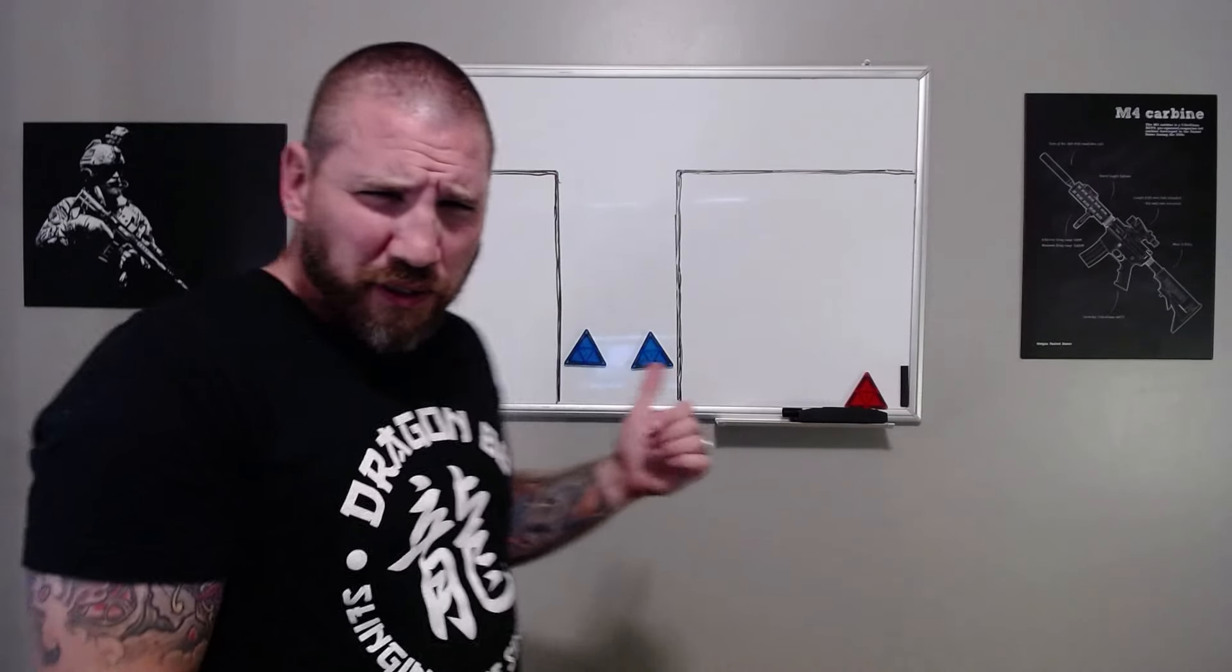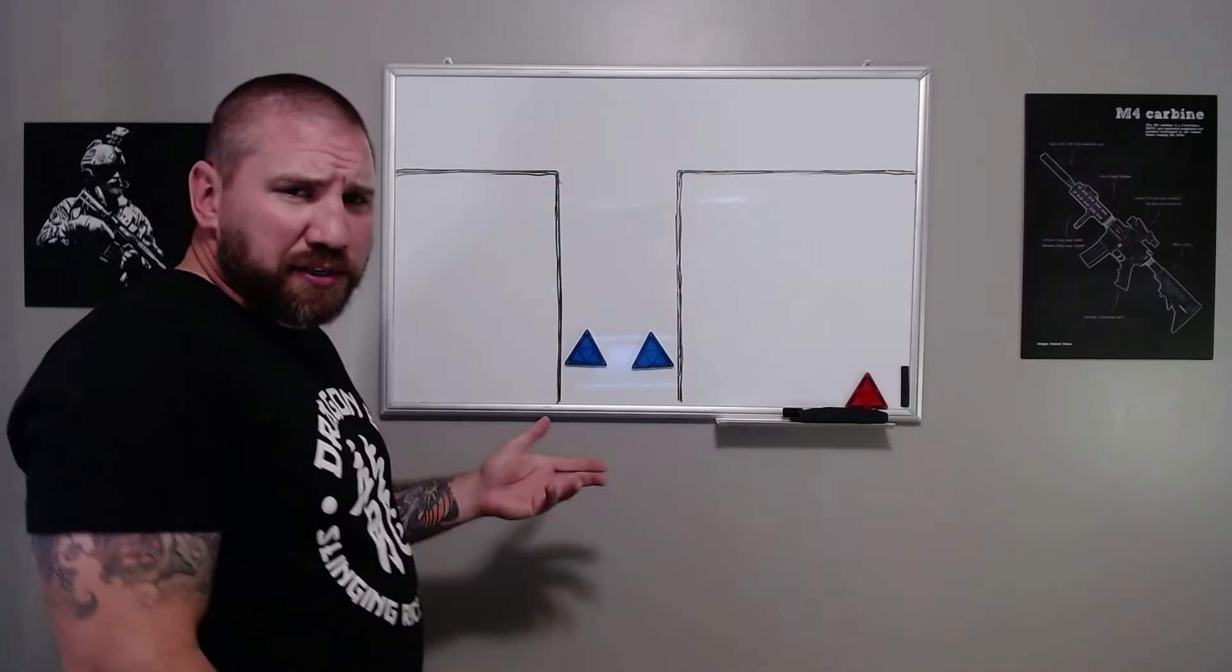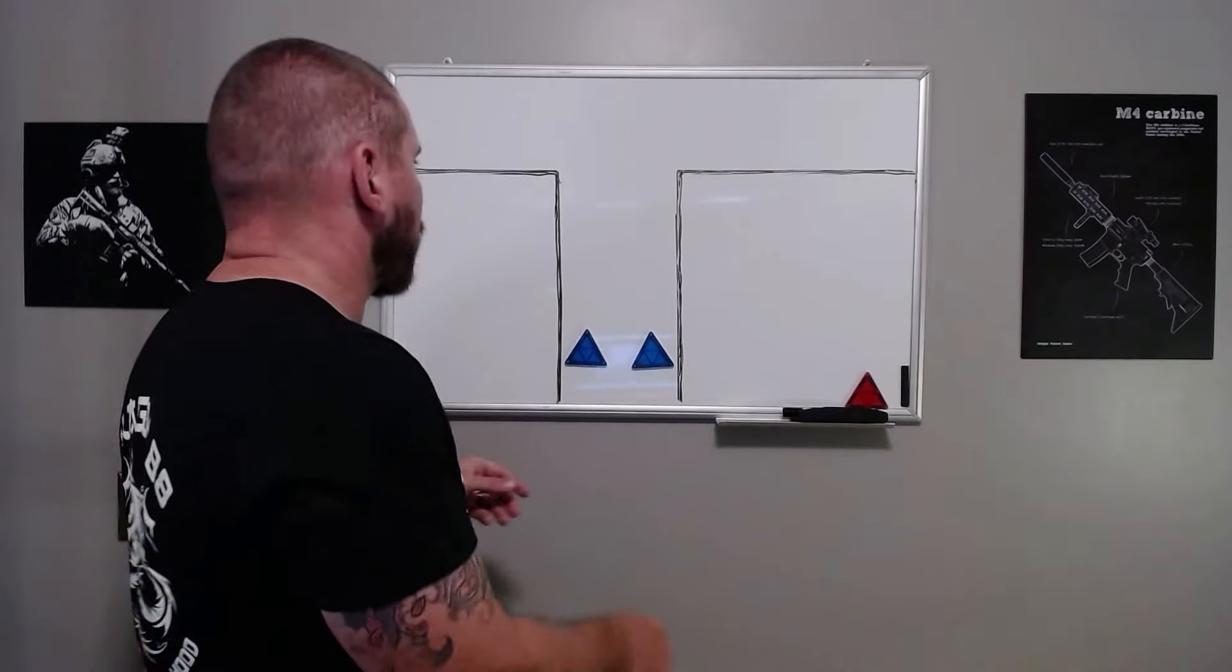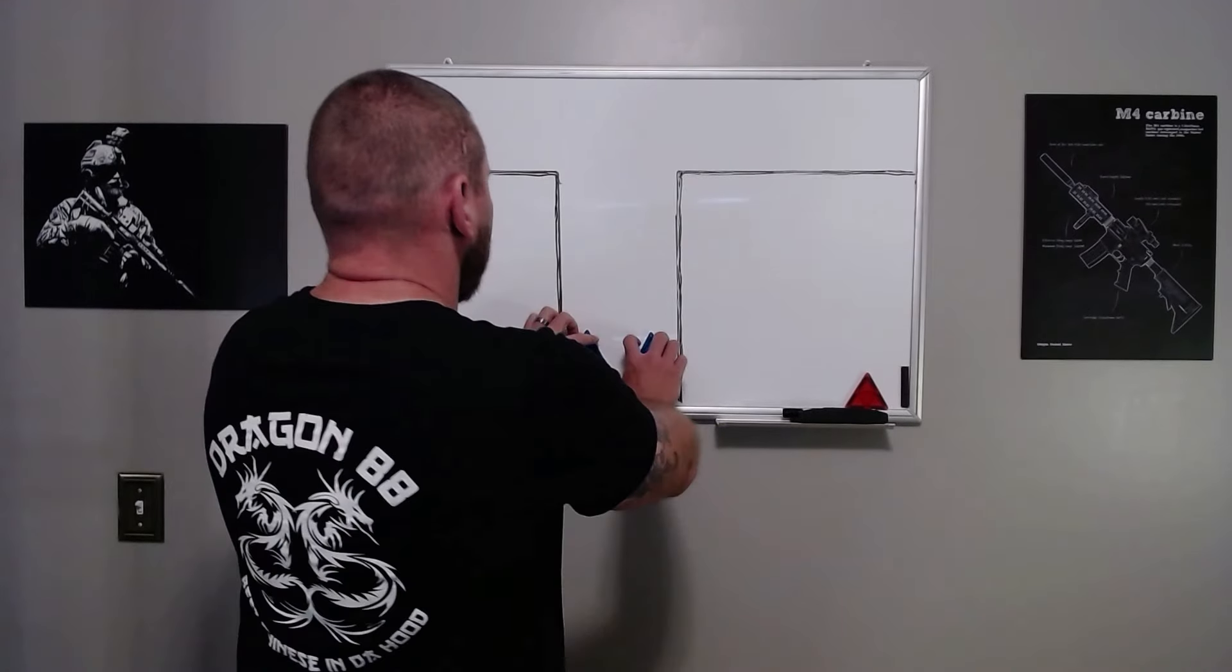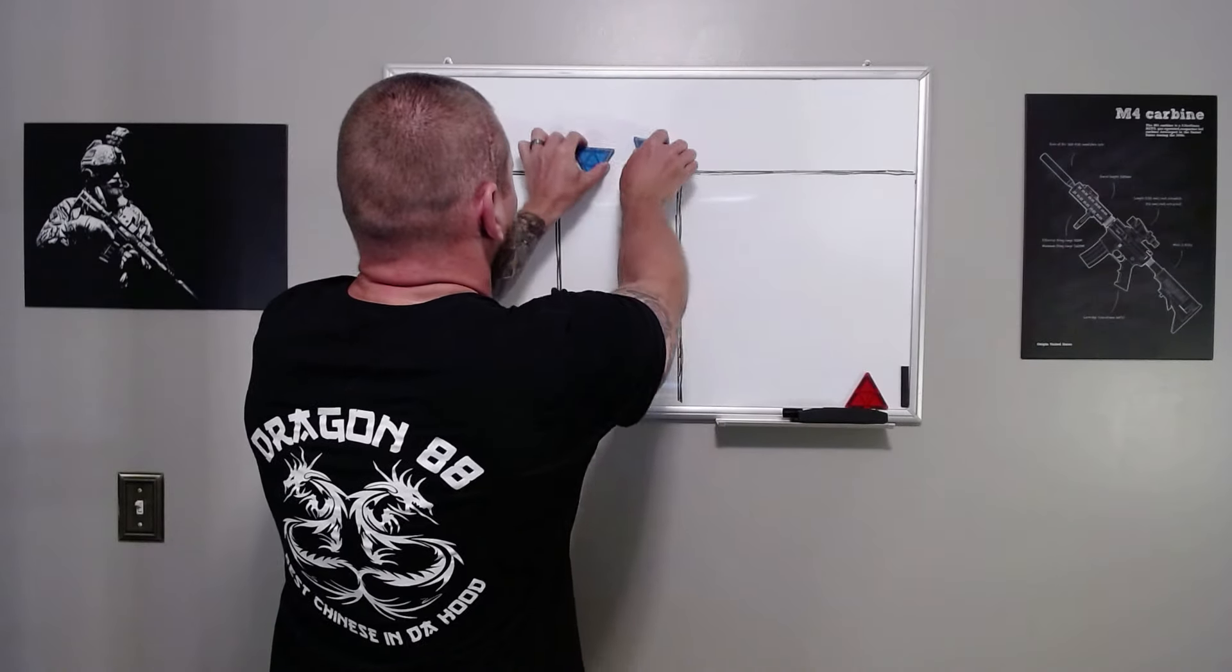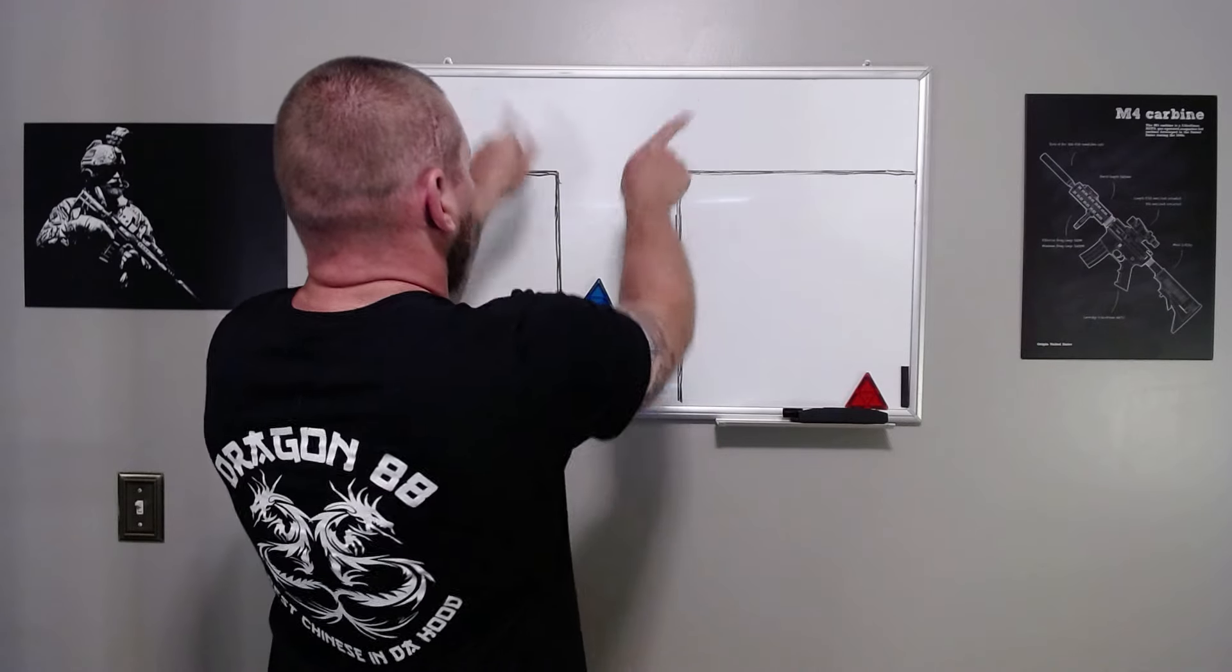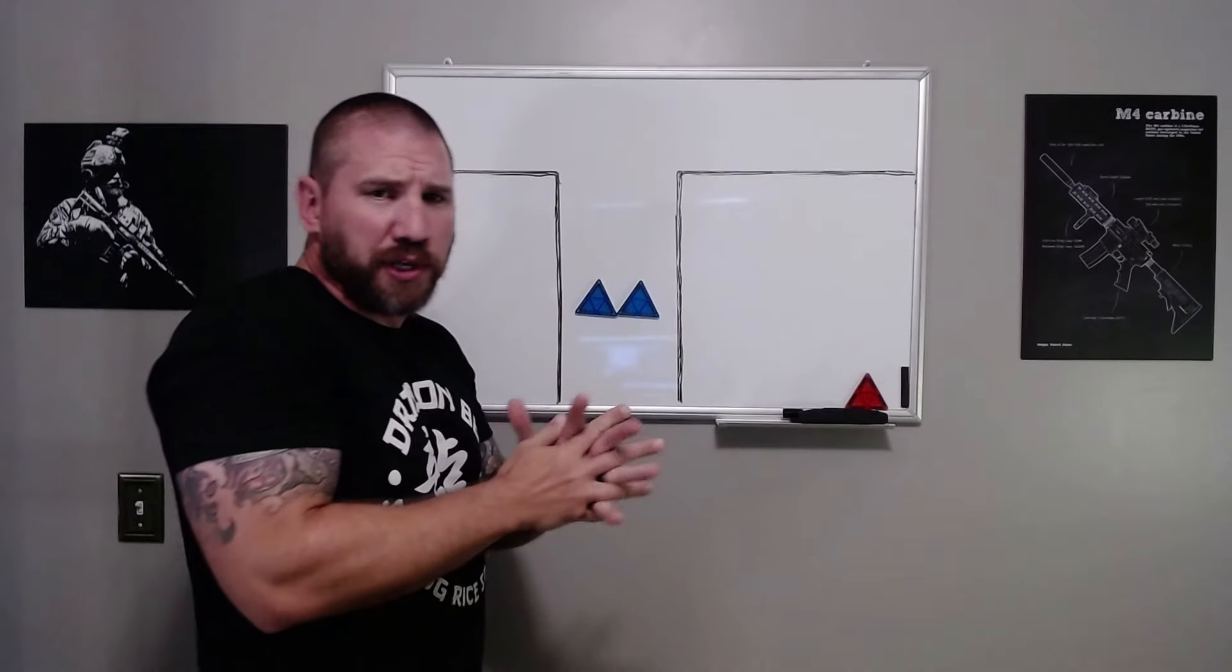So now we're going to move on to two-man clearing of a T-intersection. Definitely a lot easier because you have someone to cover your six and watch that other angle. The question is, do they both come up and just handle these angles here, each side handling its own angle? No, we do a thing called cross coverage.